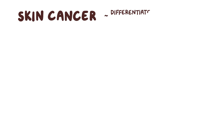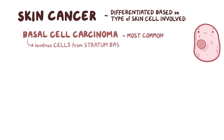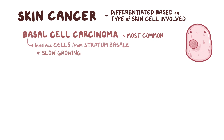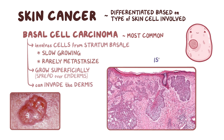Skin cancer is differentiated based upon the type of skin cell involved in the tumor mass. The most common is basal cell carcinoma, which involves cells in the stratum basale. These tend to be slow-growing tumors that can be locally invasive but rarely metastasize to distant regions. Nearby blood vessels in the dermis can become dilated to deliver more nutrients as the tumor grows. Basal cell carcinomas can grow superficially, spreading over several centimeters of the epidermis, and can break through the basement membrane into the dermis, forming islands or cords of tumor cells. Tumor cells on the periphery of these islands typically arrange themselves in a line, like fence posts, forming a palisading pattern.